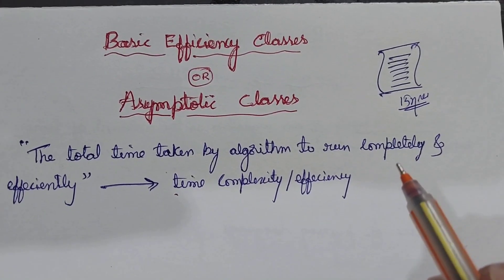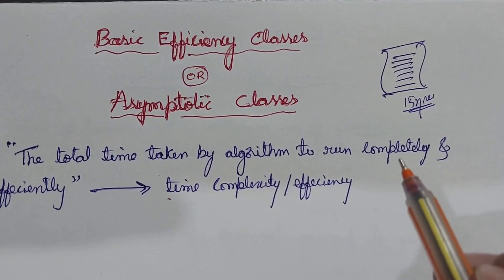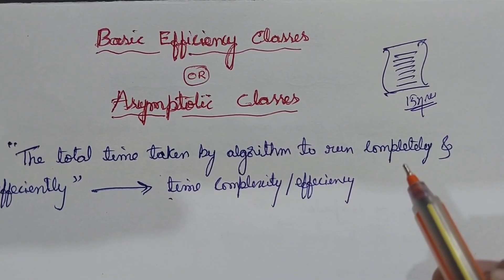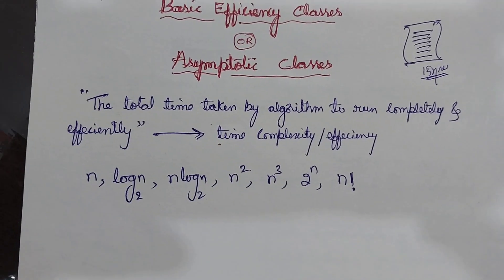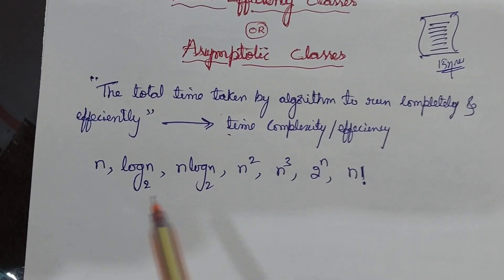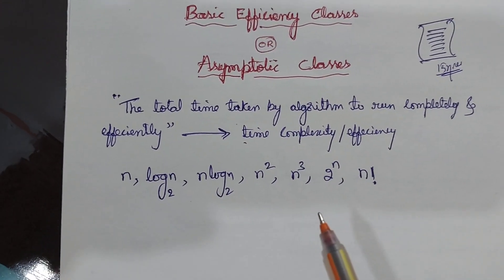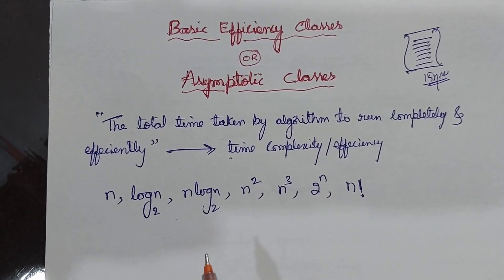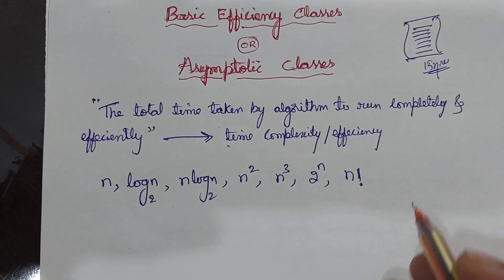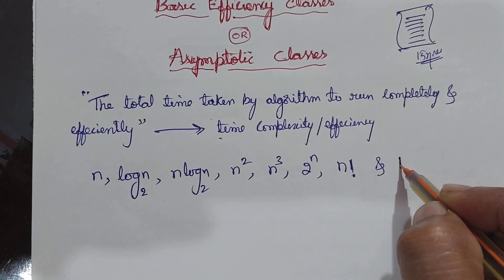Whenever we want to represent the time complexity of an algorithm, we need to use mathematical functions such as n, log n, n log n, n², n³, 2 to the power of n, and n factorial. Along with that, we use the constant function 1, which represents when an algorithm always takes constant time. These are the mathematical functions used to express the time complexity of any algorithm.